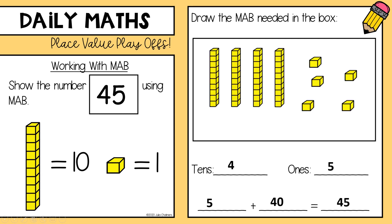All right, let's have a look at the number 45. I have got my tens house and my ones house. If I want to partition 45 — 45 is my whole — I'm going to partition it into tens and ones. I know that I've got one, two, three, four groups of 10, and then I've got some ones over here.